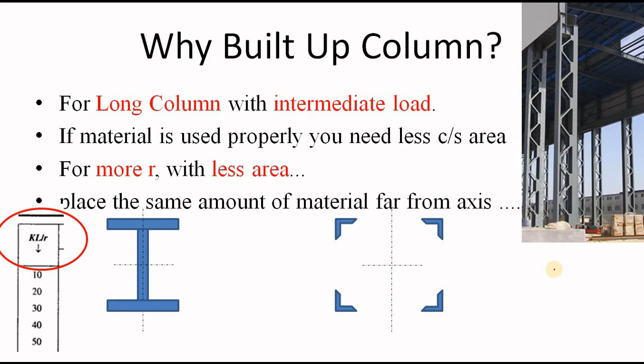Now if you have a long column with intermediate load, to design it, you have two options. First one is, use a rolled section where KL by r or slenderness ratio is high. And that's why the design strength is very much less. So to bear the load with less design strength, you need a large cross-sectional area.